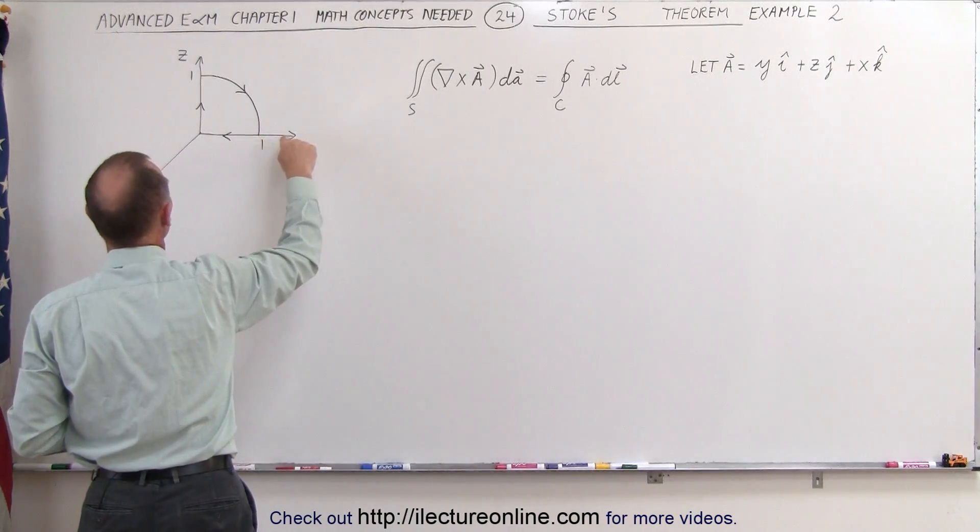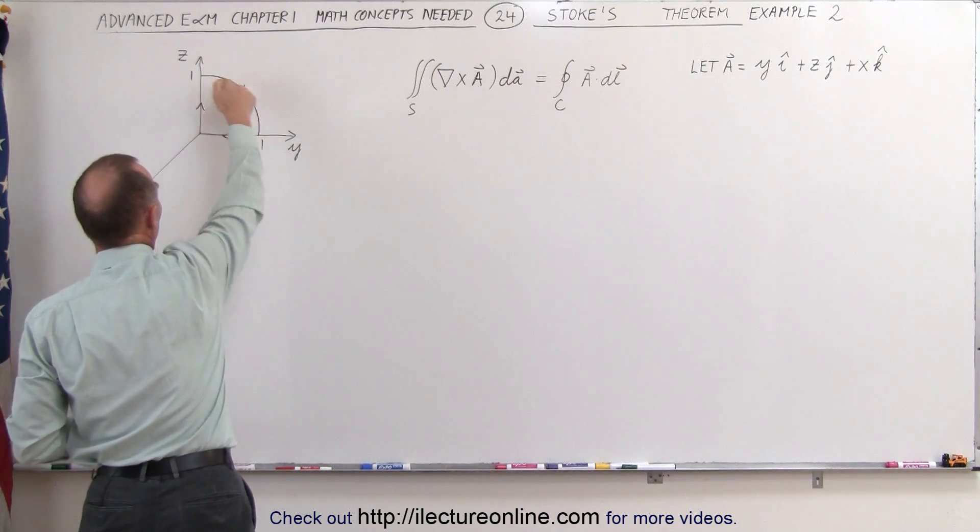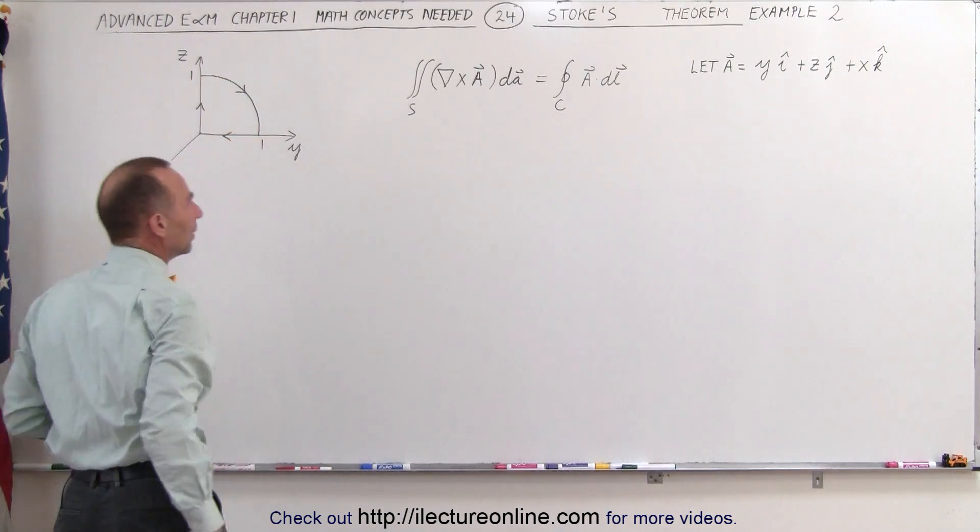Here's our curve. Our curve goes along the y-axis, along the z-axis, and then forms a semicircle, or I should say quarter circle, from here to there. Notice that the radius of that is equal to 1.